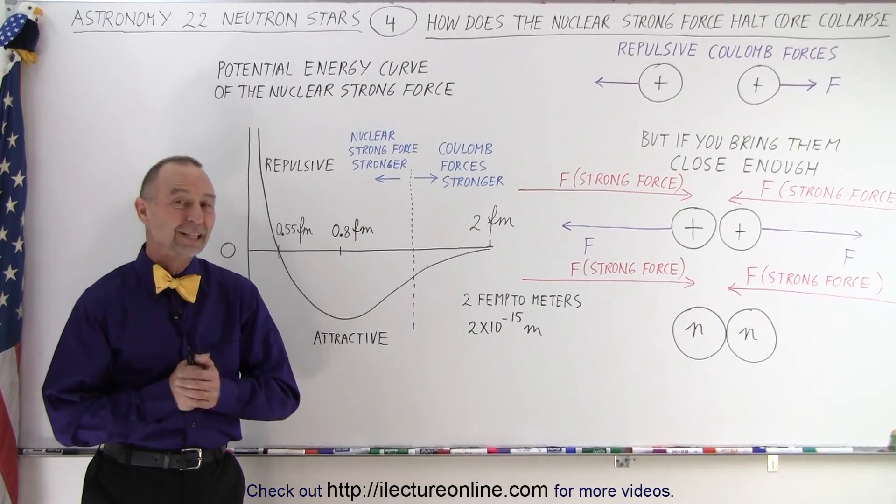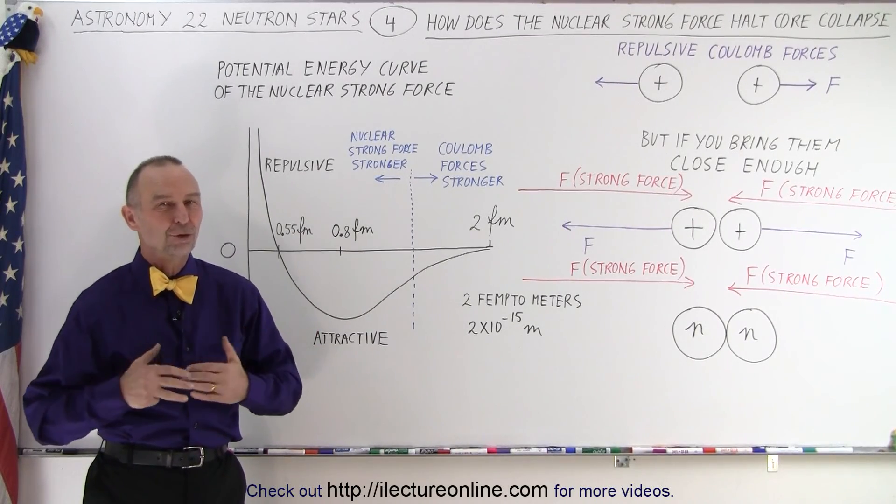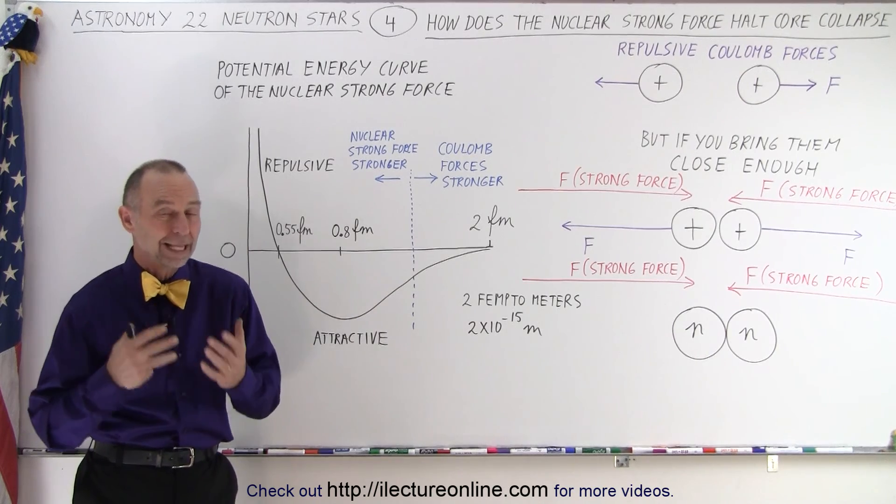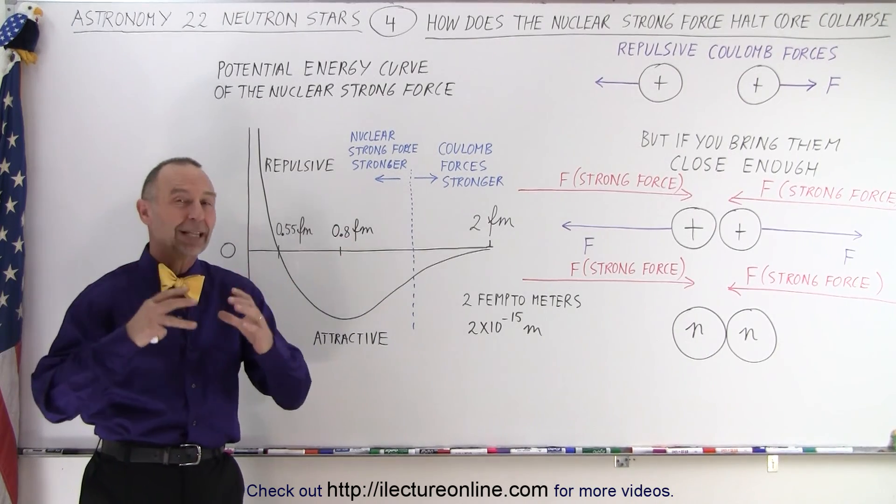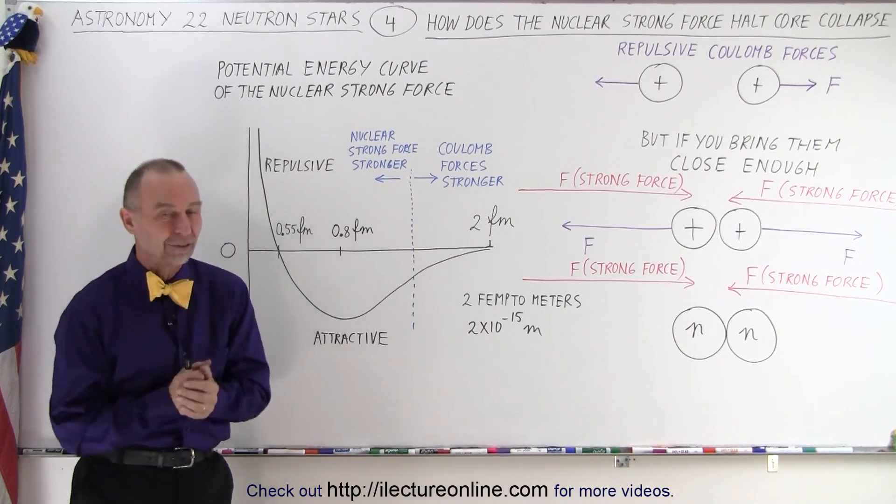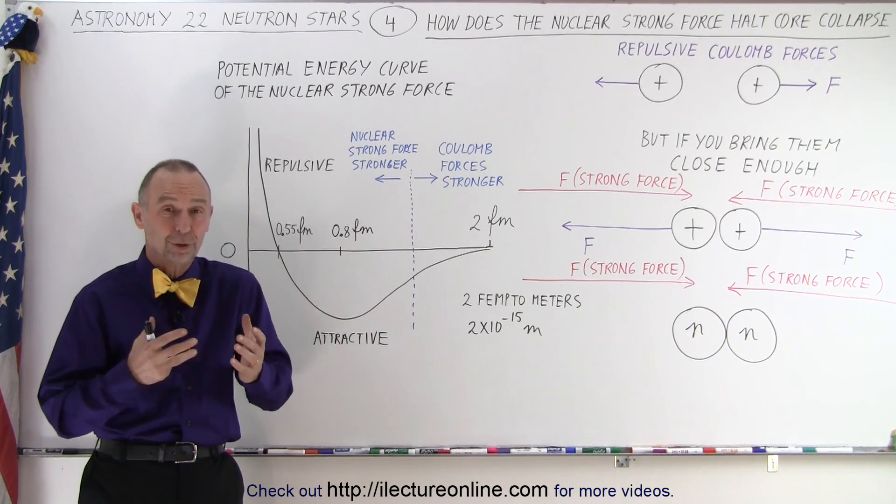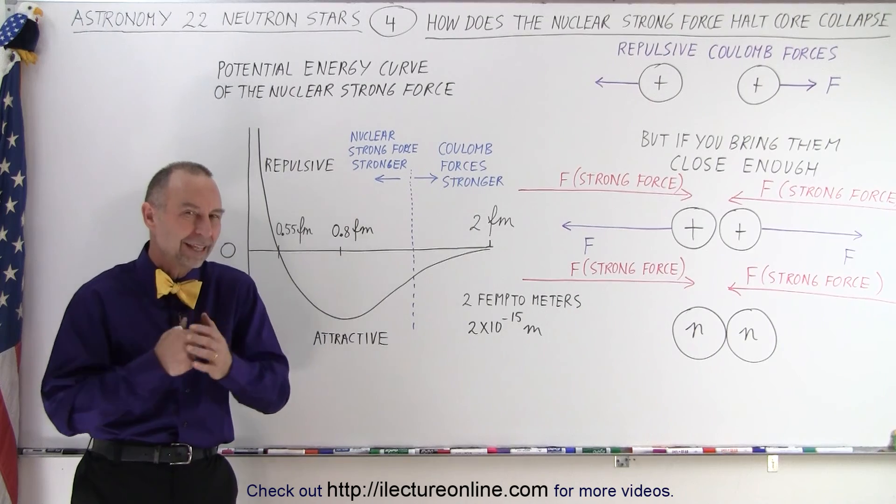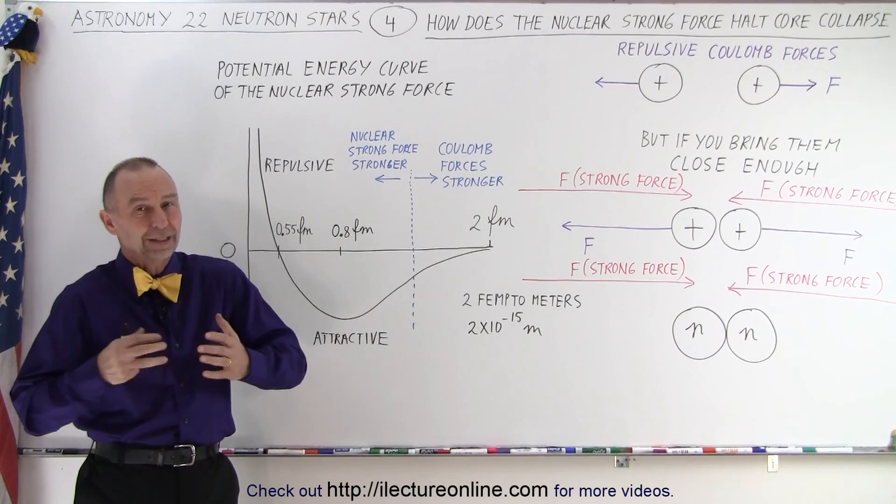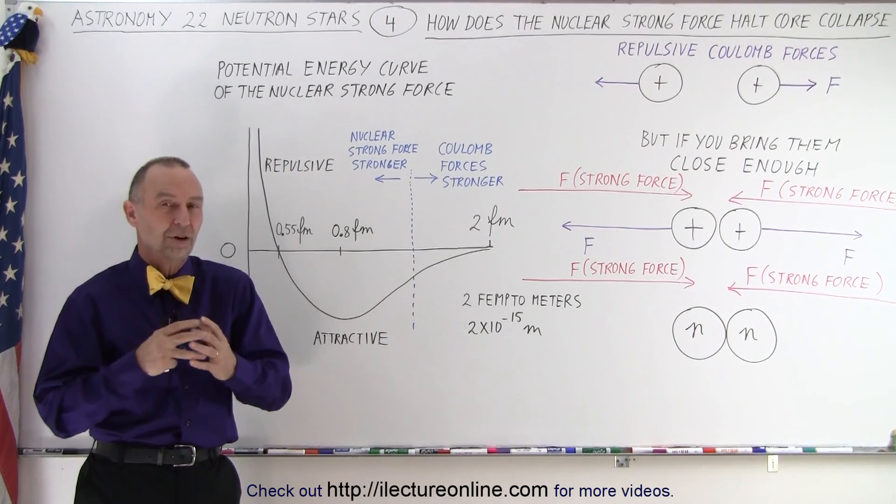Welcome to ElectronLine. In the previous video we showed you that neutron degeneracy was part at play in stopping the collapse of that core of that supermassive star. But we also realized it wasn't enough. It could only account for a total mass of 0.7 times the mass of the sun and we know that the mass of a neutron star is bigger than that.